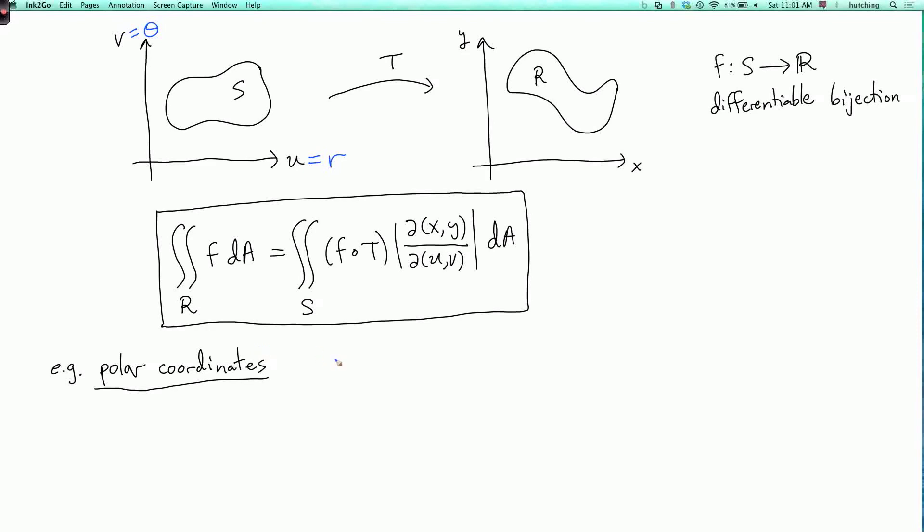We have to compute the magnification factor, the Jacobian. Here X is R cosine theta and Y equals R sine theta.